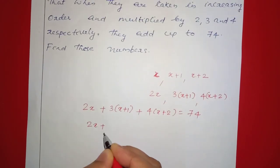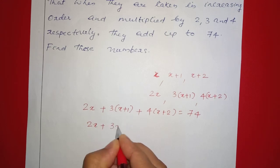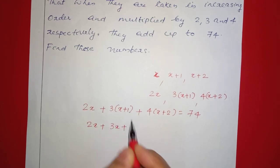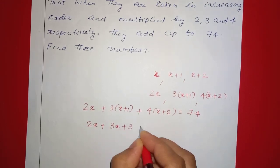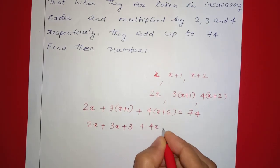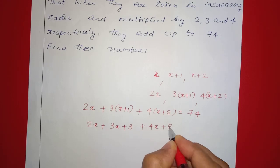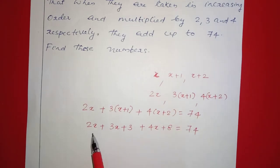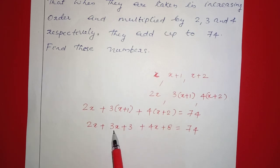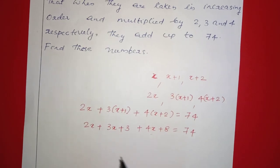So we get: 2x plus 3 into (x plus 1) is 3x plus 3, plus 4 into (x plus 2) is 4x plus 8, is equal to 74. Adding the x terms: 2x plus 3x plus 4x gives 9x.